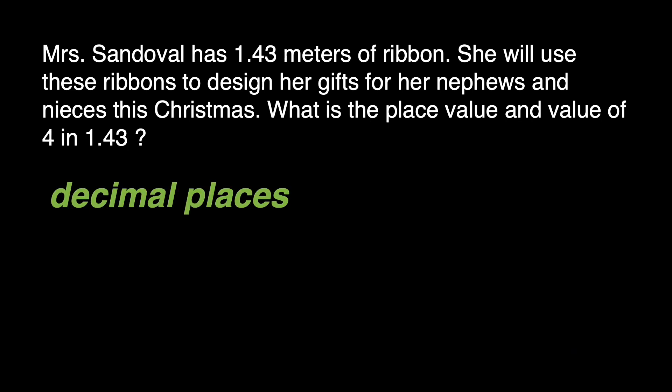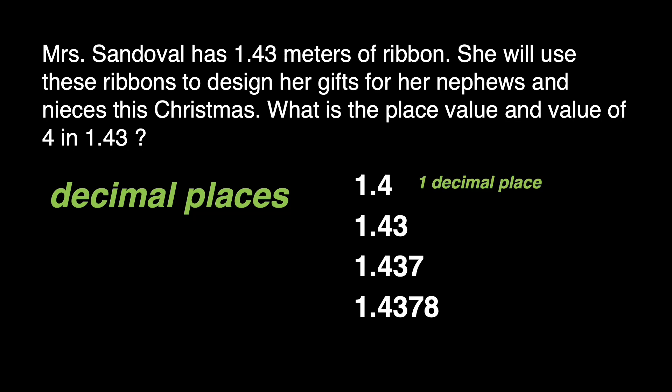What is a decimal place? A decimal place refers to the number of places occupied by the digits after the decimal point. For example, 1 and 4 tenths has 1 decimal place. 1 and 43 hundredths has 2 decimal places. 1 and 4 hundred thirty-seven thousandths has 3 decimal places. And 1 and 4 thousand three hundred seventy-eight ten-thousandths has 4 decimal places.